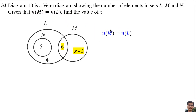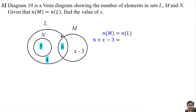M means the number of elements in set M, so the number of elements in M is 6 plus x minus 3. And L means the number of elements in set L, so the number of elements in set L is 5 plus 6 plus 4.